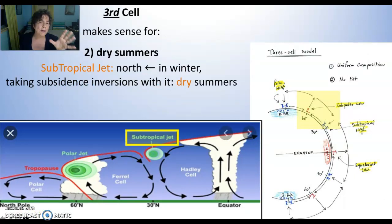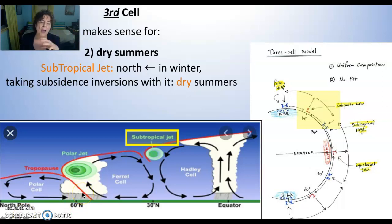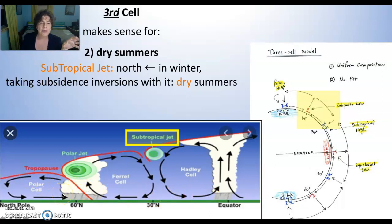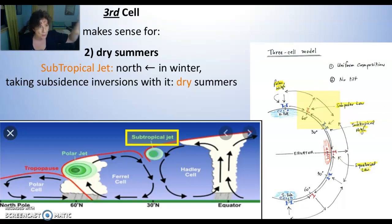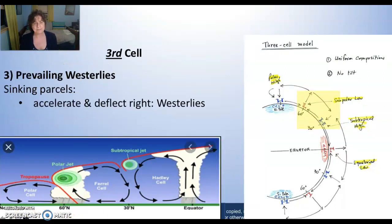The third cell also explains the dry summers that we generally have around our area and particularly the dry summers in Vermont. In the summer, the warm air from the equator has more of a push and pushes the polar cell further north. In pushing the polar cell further north, we push the convection and the rising slow clouds up closer to the 60s, and we give ourselves the dry area of the middle Ferrel cell. So it can explain our dry summers. And in addition, it'll definitely explain the prevailing westerlies of the jet stream.